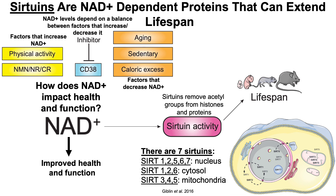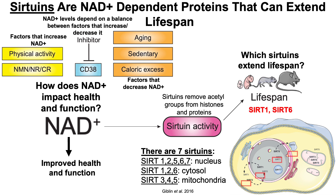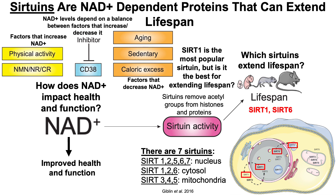Some sirtuins are found in the nucleus, the cytosol, and others like sirtuins 3, 4, and 5 are found in mitochondria. The focus here is lifespan — which sirtuins extend lifespan? In this video, I'm going to show data for SIRT1 and SIRT6.